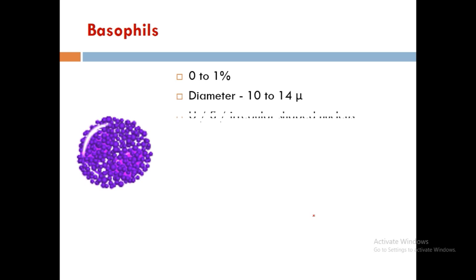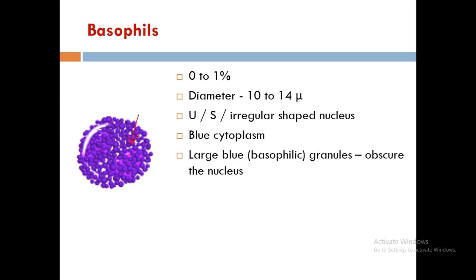Basophils make up 0 to 1 percentage of WBCs with a diameter of 10 to 14 microns. The nucleus is either U-shaped or S-shaped, mostly bi-lobed with both lobes attached in an S-shape manner. They have blue cytoplasm and large blue basophilic granules that obscure the nucleus, making it difficult to clearly identify the two lobes.